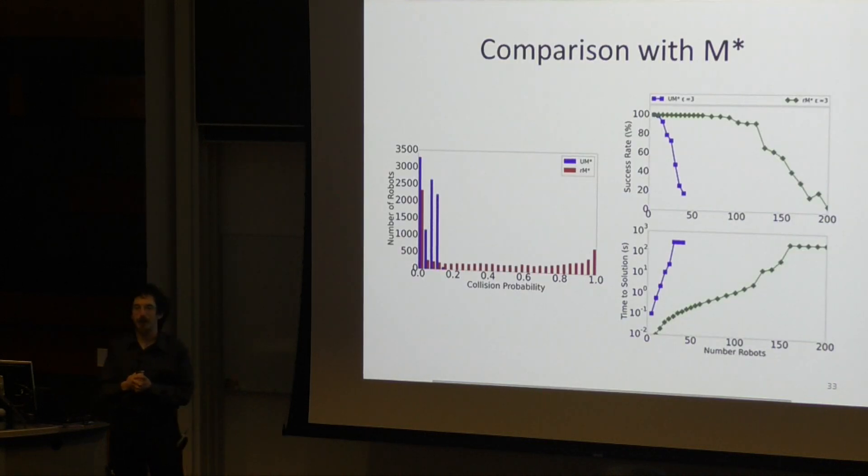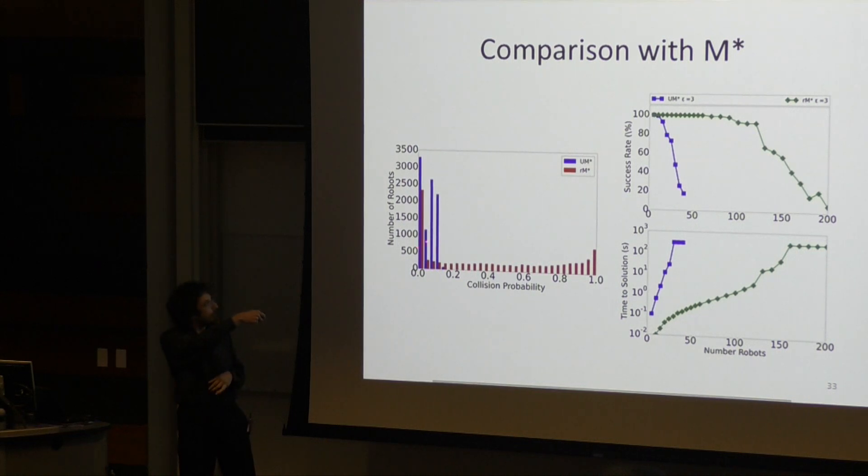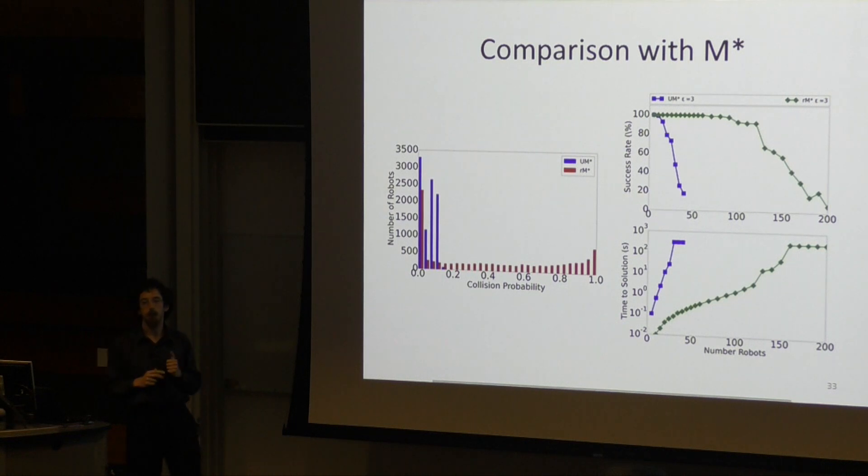The first question was, is planning with uncertainty actually worth anything? So on the left we have a histogram of the probability of individual robots colliding while executing plans computed using UMSTAR in blue and just MSTAR ignoring uncertainty in red. You can see that UMSTAR keeps the collision probability well bounded, whereas the probability of collisions ignoring uncertainty is basically unbounded.